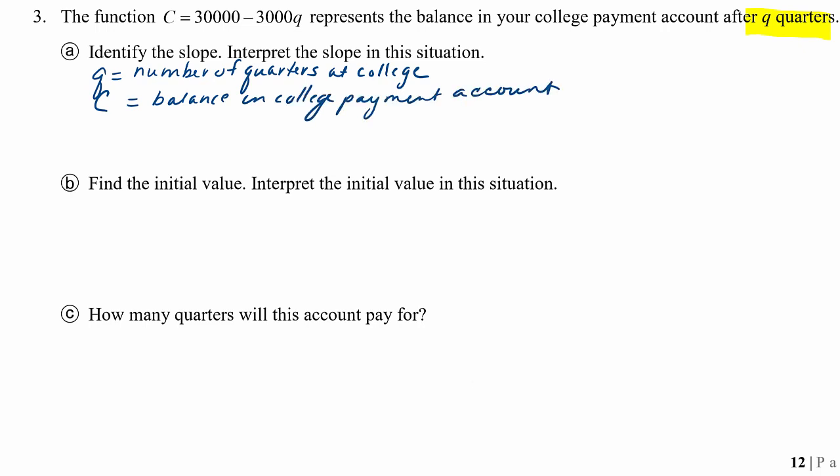So that means that if we just rewrite this equation and put the negative 3,000Q plus 30,000 in this form, then this equation is in slope-intercept form.